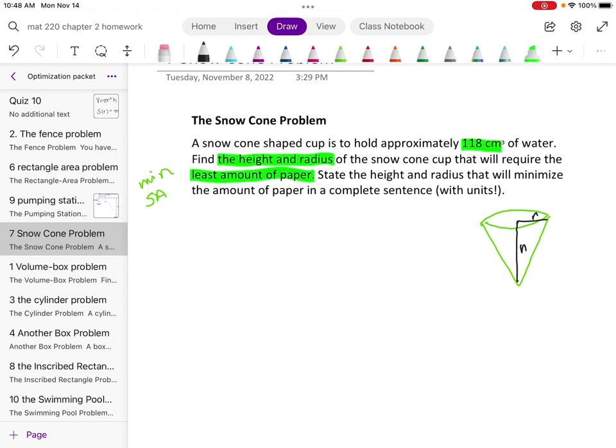And those are the dimensions we're looking for. So we know the volume of a cone is one-third pi r squared h. And in this particular case, we're told that the volume is 118 cubic centimeters. So I'm going to just write 118 equals one-third pi r squared h.